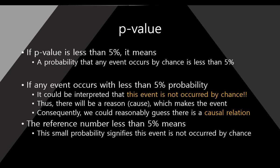So I will explain in more detail. If an event occurs with less than 5% probability, it means it could be interpreted that this event is not occurred by chance.